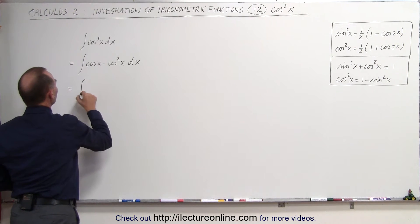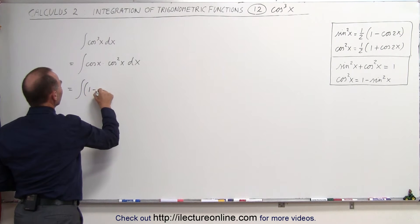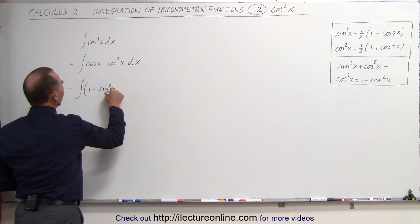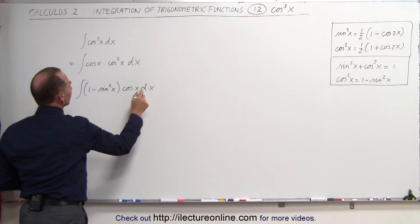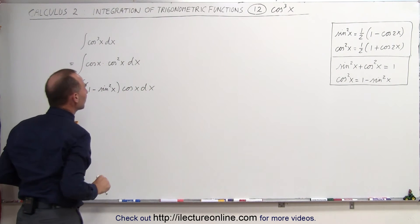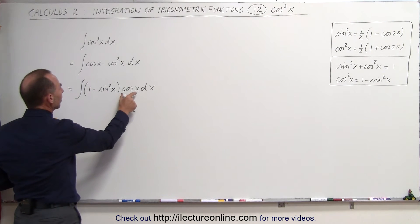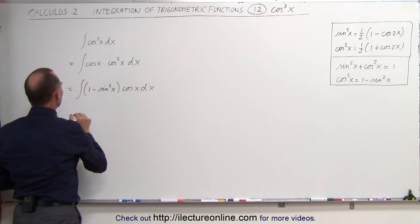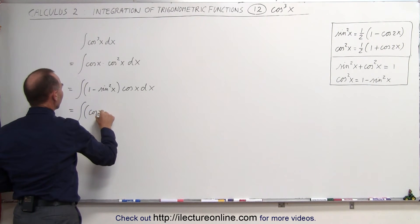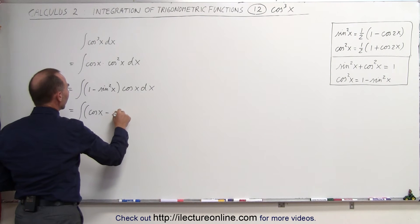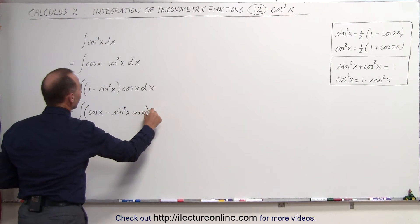This is equal to the integral of — instead of the cosine square of x — I write 1 minus the sine square of x, and I still have my cosine of x, times dx. Now I'm going to multiply this through each of the two terms. This is equal to the integral of the cosine of x, minus the sine square of x times the cosine of x, times dx.